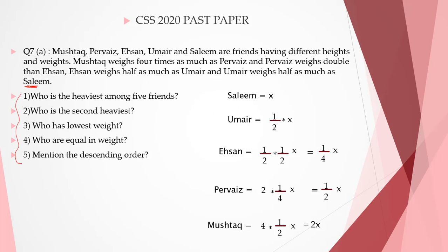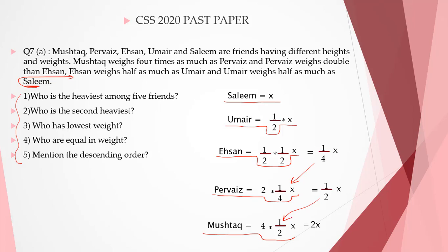Starting from Salim, going backwards, suppose X for Salim — X could be any value. Umair's weight is half of Salim's weight. Ehsan is half of Umair's weight. Parvez is twice of Ehsan's weight. And Mushtaq is 4 times of Parvez. Assume any value of X, preferably one divisible by 4 and 2 — suppose X equals 8. Plug in the value of X in every equation to check the relative difference among their weights.